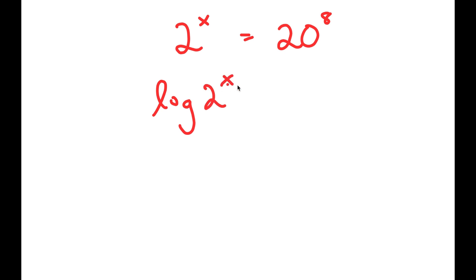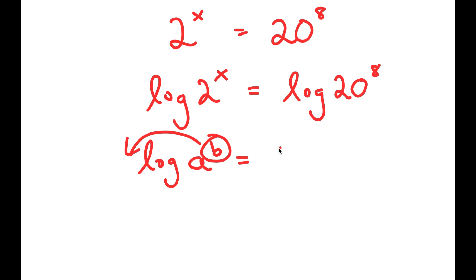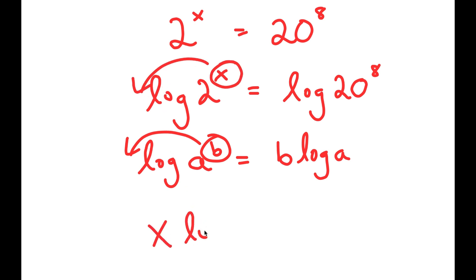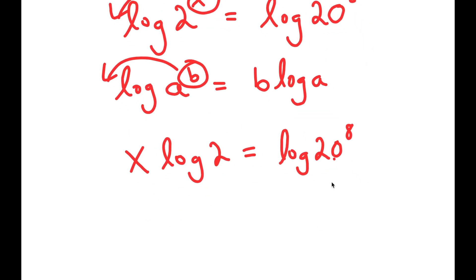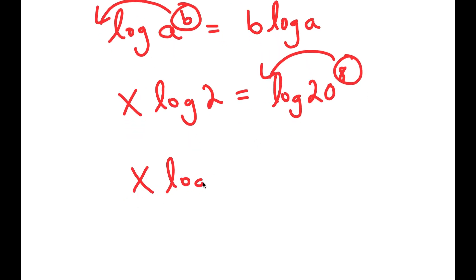So I get log of 2 to the power of x is equal to log of 20 to the power of 8. Now, if I have something in the form log a to the power of b, I can move this exponent b to the front, so it becomes b times log a. In this case, I can move x to the front and get x times log 2 is equal to log of 20 to the power of 8. Using the same property on log 20 to the power of 8, I move 8 to the front, so I get x times log 2 is equal to 8 times log 20.